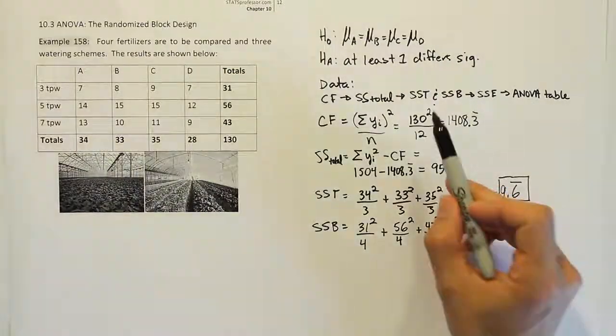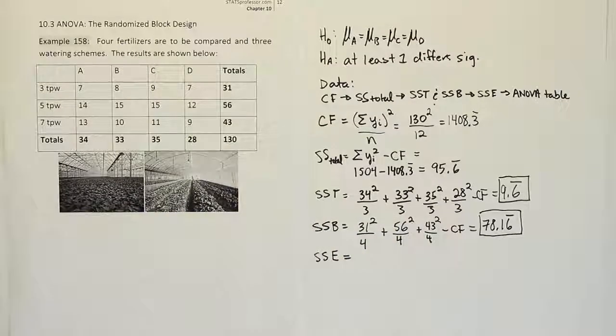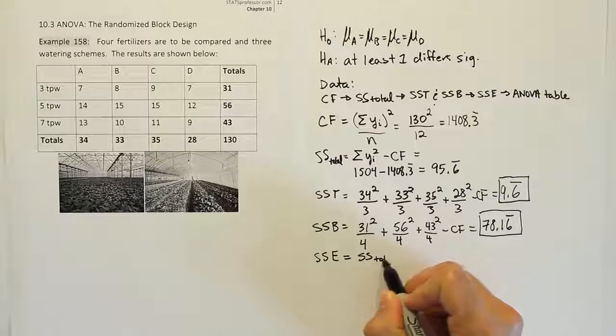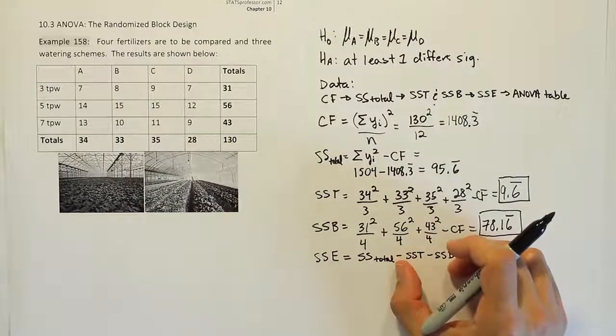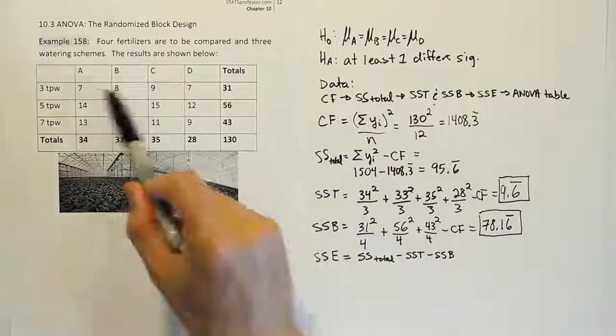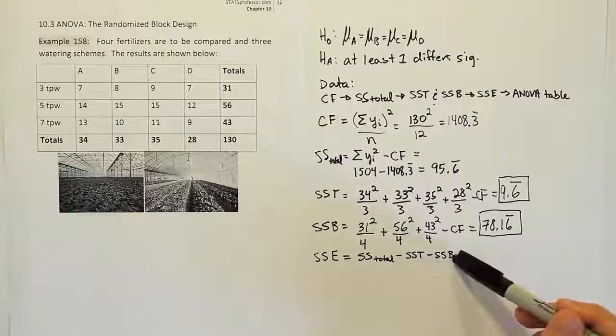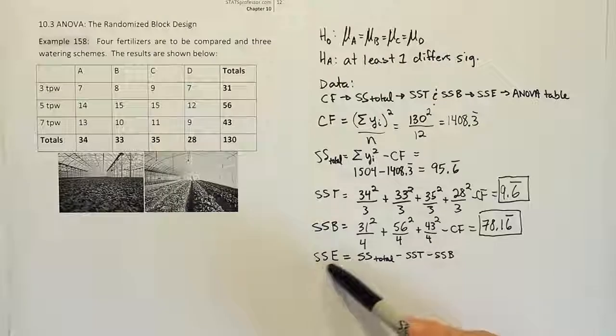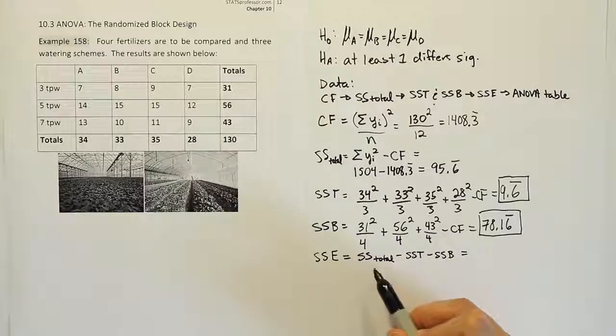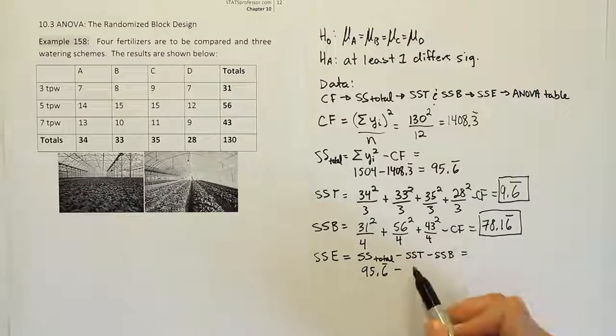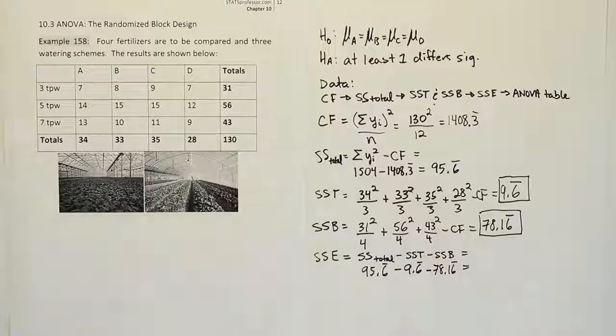Now, continuing with the data step, we've done SST, SSB, now we need to do SSE. The logic behind the sum of square for error is always the same, no matter which problem you're working with. It's basically the idea that if you take the total sum of squares, SS Total, and you subtract off SST and SSB in this case, then that'll remove the variation that's due to those treatments. So the variation that's due to the fertilizers, the variation that's due to the watering scheme, that will be removed from the model, or from the total variation. And that will leave you left over with the variation that's due to every other factor that we didn't account for in our model. And those are the things we call error. That's all we have to do is subtract these numbers. So we have these numbers. Let's just go ahead and do the subtraction. SS Total is 95.6 repeating. We're going to subtract from that 9.6 repeating, which is the SST. And then we're going to subtract 78.16 repeating, which is the watering scheme and the blocks.